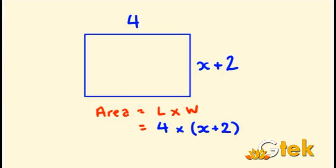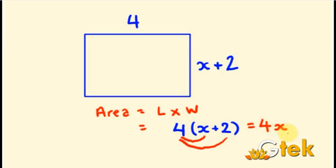Now I have to multiply this expression with 4. So I can write it as 4 open bracket x plus 2, instead of writing it as 4 into x plus 2. So how to multiply this term? 4 into x and 4 into 2. In between you have to add the addition operation. So 4 into x is 4x, and the sign is plus, and 4 into 2 is 8. So the answer is 4x plus 8.